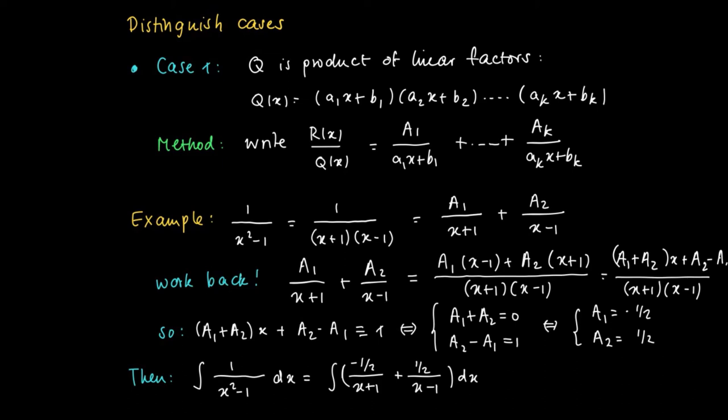Well, this is great, since now we have two terms on which we can easily find a primitive. So a primitive of -1/2 divided by (x+1) equals -1/2 times the natural logarithm of |x+1|. And 1/2 divided by (x-1) has a primitive of 1/2 ln|x-1|, plus of course the integration constant.